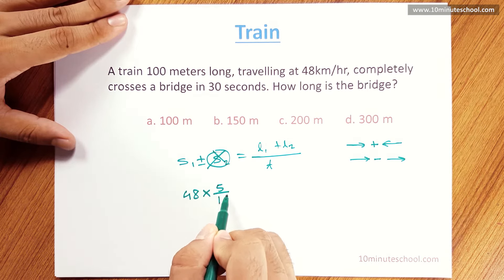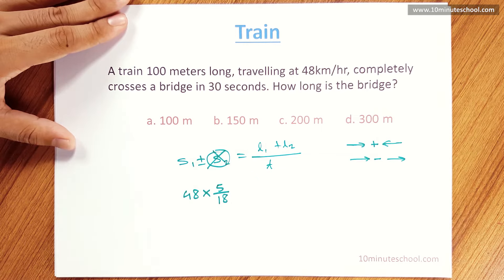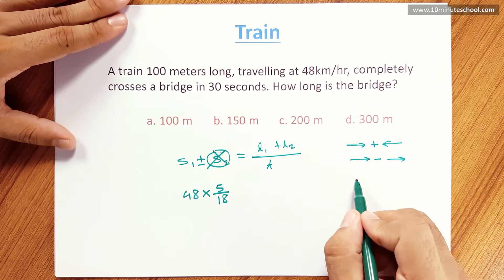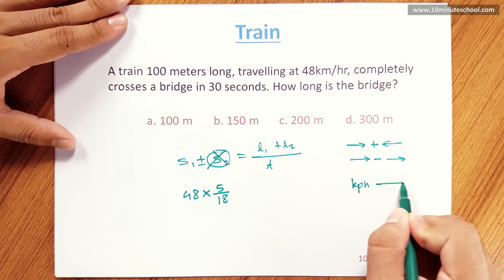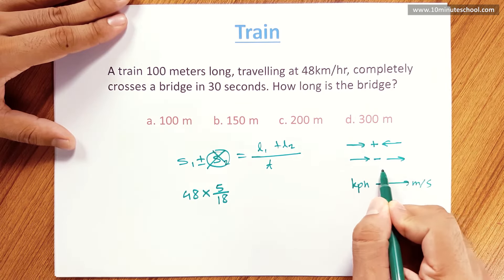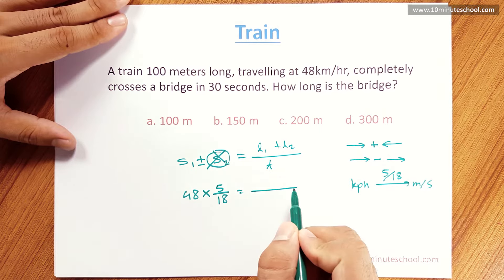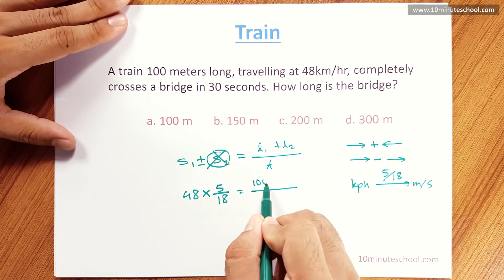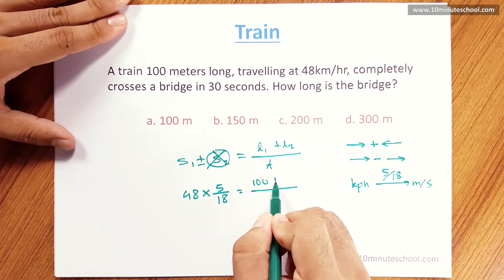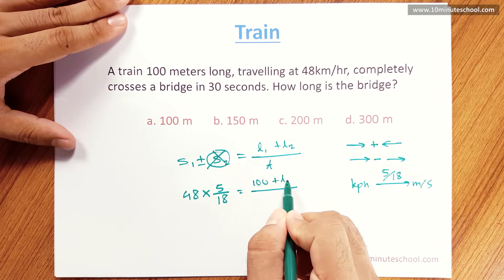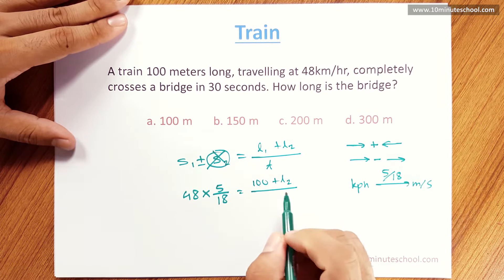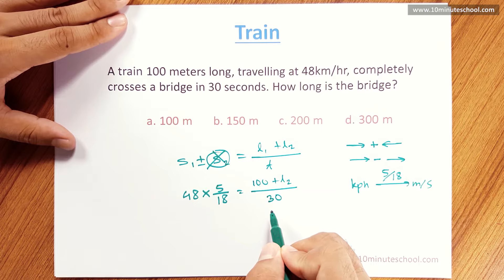S1 is the speed in km per hour. We will now convert to meters per second using the conversion factor 5 by 18. The training length is 100. The bridge length L2 is unknown. L1 is 100 and L2 is whatever. The time is 30 seconds.